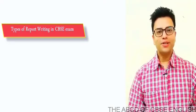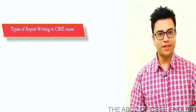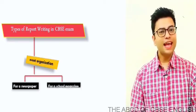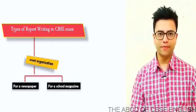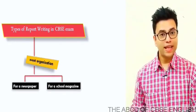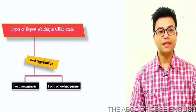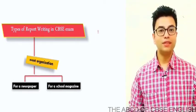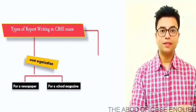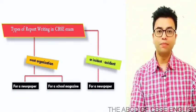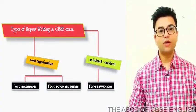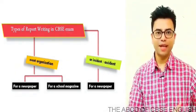Generally, you get to see two types of report writing questions in your exam. The first one is about an event organization — it can be for a newspaper or for a school magazine. For a newspaper it could be an awareness campaign; for a school magazine it can be a report about an annual day celebration. The other type is about an incident or an accident, such as a robbery or a bus mishap.